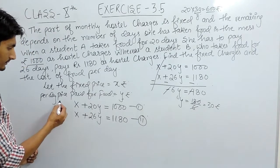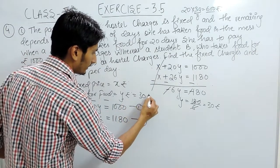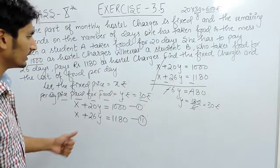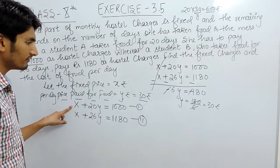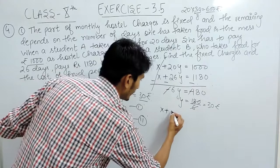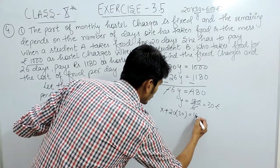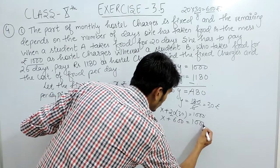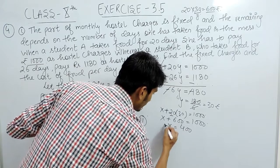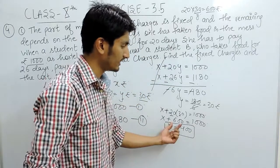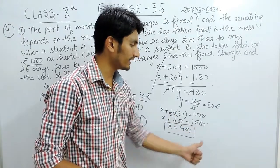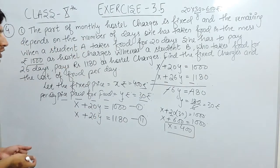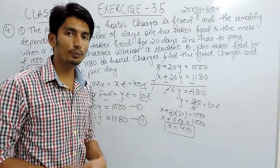So the price paid for food per day is Rs. 30. To find the value of X, substitute Y = 30 into the first equation: X + 20 × 30 = 1000, which gives X + 600 = 1000, so X = 1000 − 600 = Rs. 400. Therefore, the fixed price for the hostel is Rs. 400 and the daily food charge is Rs. 30.